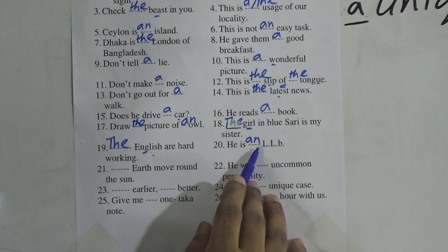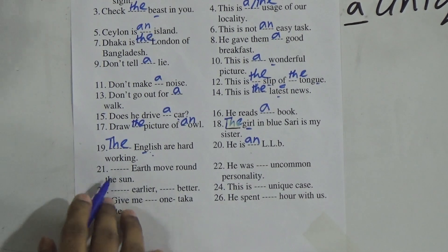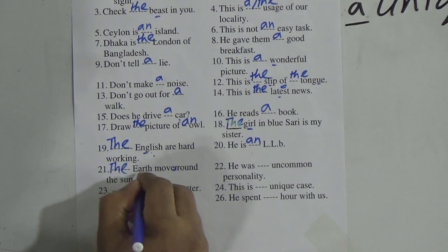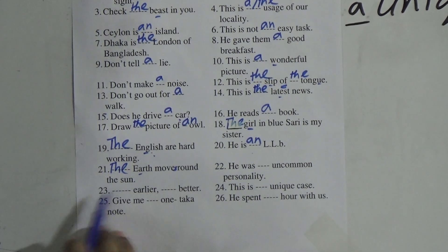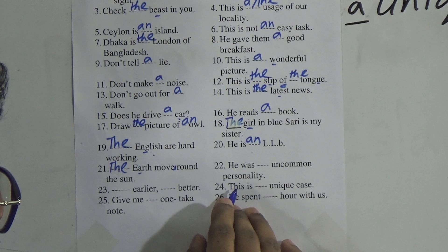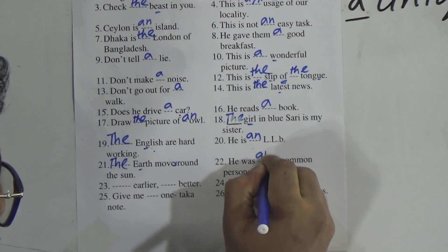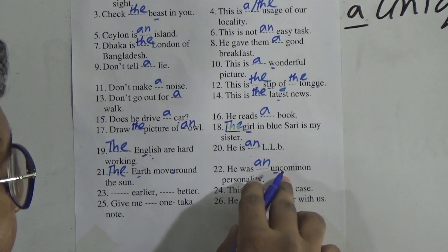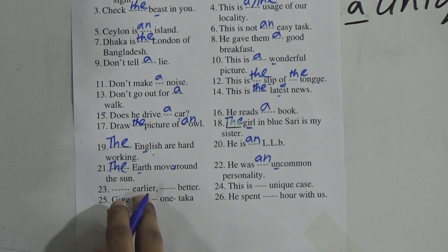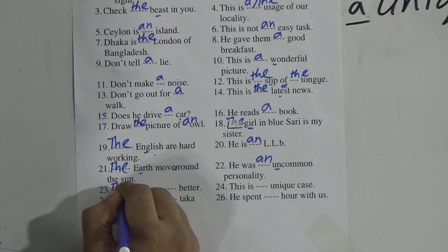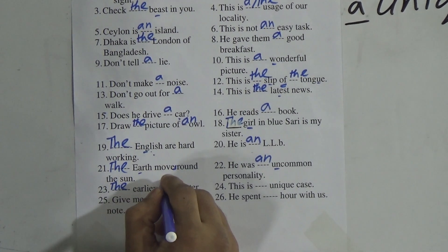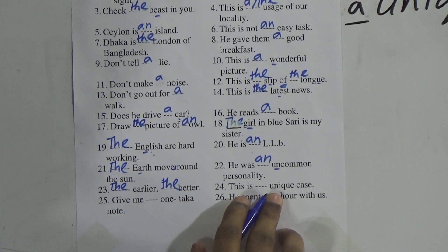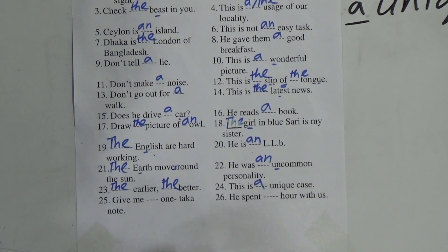He is an LLB. If you pronounce the abbreviation 'L', the vowel 'A' comes first, so we use 'an'. Number 22: The earth moves round the sun — the earth is identified, so we use 'the'. He was an uncommon personality — 'U' here is a vowel and we are pronouncing it as a vowel sound, so we use 'an'. Number 23: The earlier, the better — this is a proverb, so we use 'the'.